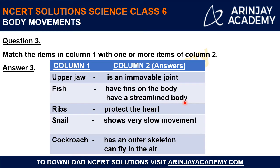Snail shows very slow movement — we have all seen that a snail moves quite slowly. Cockroach, being an arthropod, has an exoskeleton — the skeleton is situated outside the body. Also, cockroach can fly in the air. So we have successfully matched column 1 with column 2.